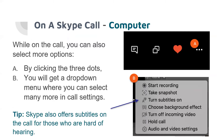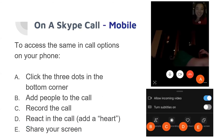Skype is simply another type of video meeting tool, but it has different features than Zoom. While on a call, you can select more options by clicking the three dots — more options will appear. On mobile, click on the three dots in the bottom corner to add people to the call, record the call, react in the call, add a heart reaction, or share your screen.